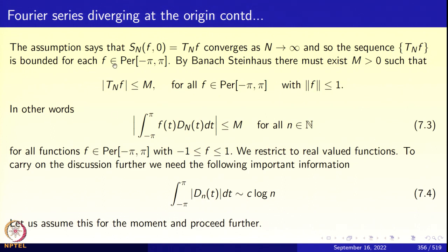So T_n(f) is bounded for each f in the space of periodic functions. By the Banach-Steinhaus Theorem, there is a constant m bigger than 0 such that mod T_n(f) is less than or equal to m for all 2π-periodic continuous functions of norm 1. In other words, mod integral from −π to π of f(t) D_n(t) dt is less than or equal to m. We shall now restrict ourselves to real-valued functions. We will need some information about the behavior of the integral of mod D_n(t): that integral from −π to π of mod D_n(t) dt is approximately c·log n. This is an important piece of information.